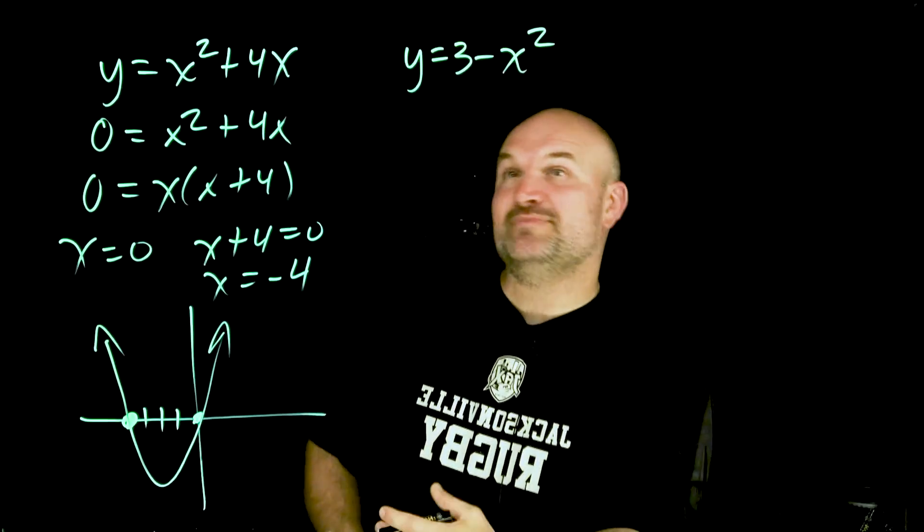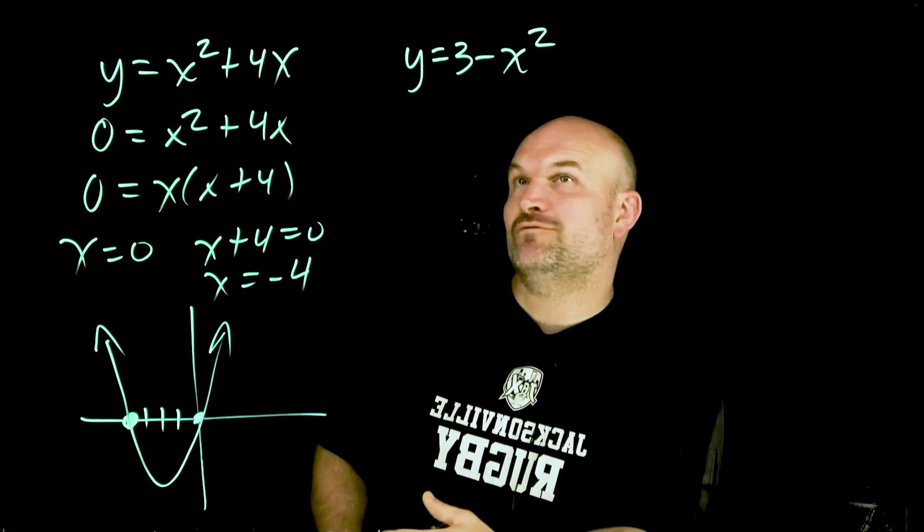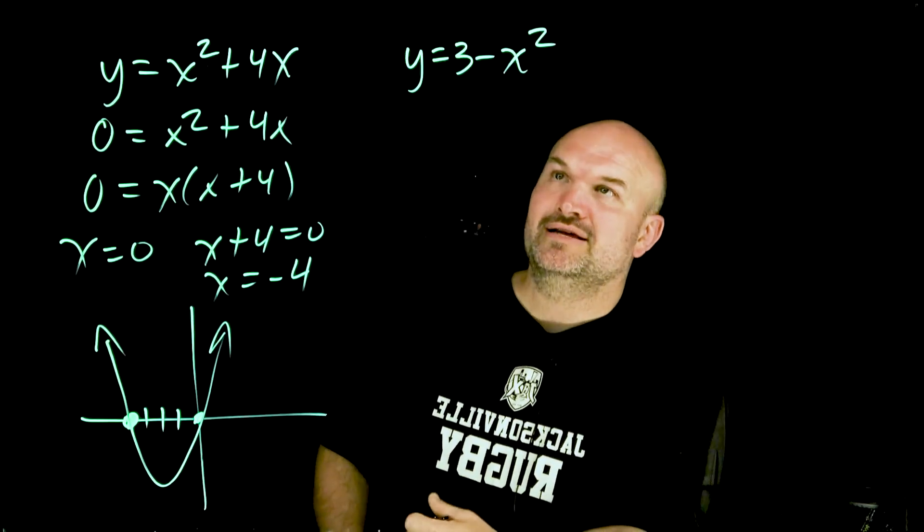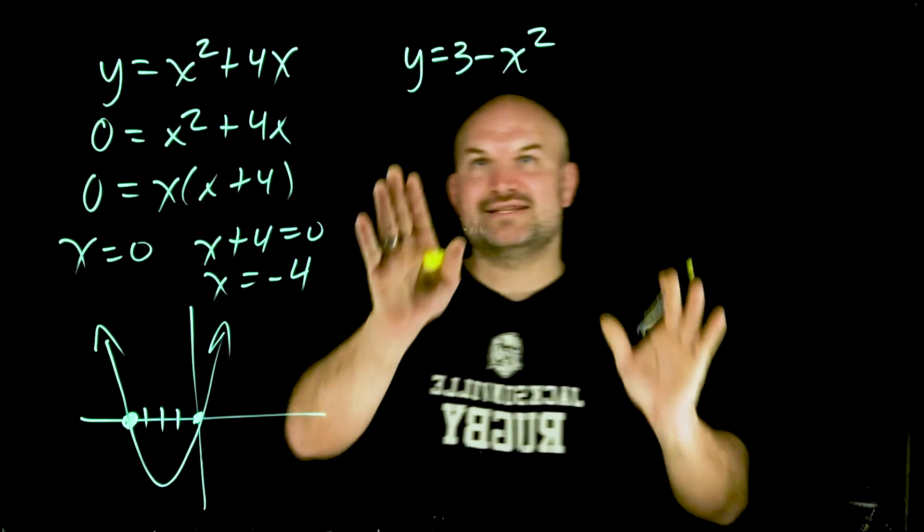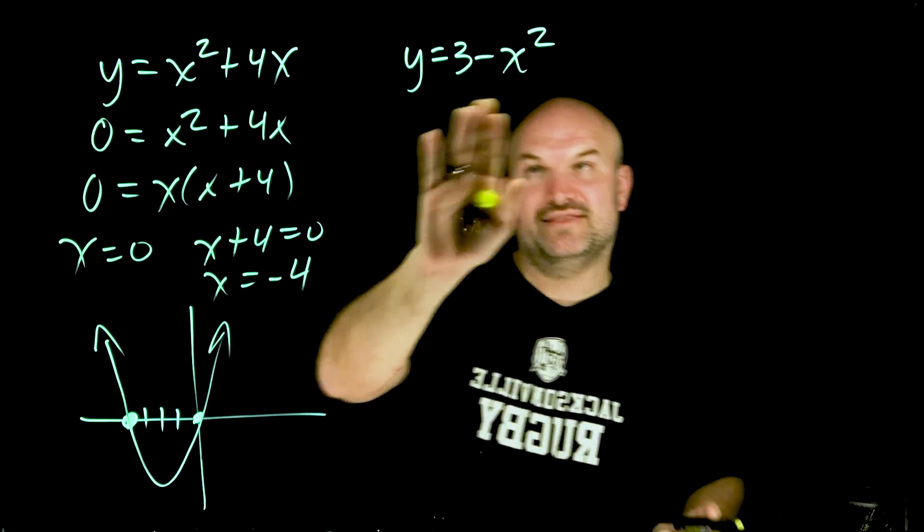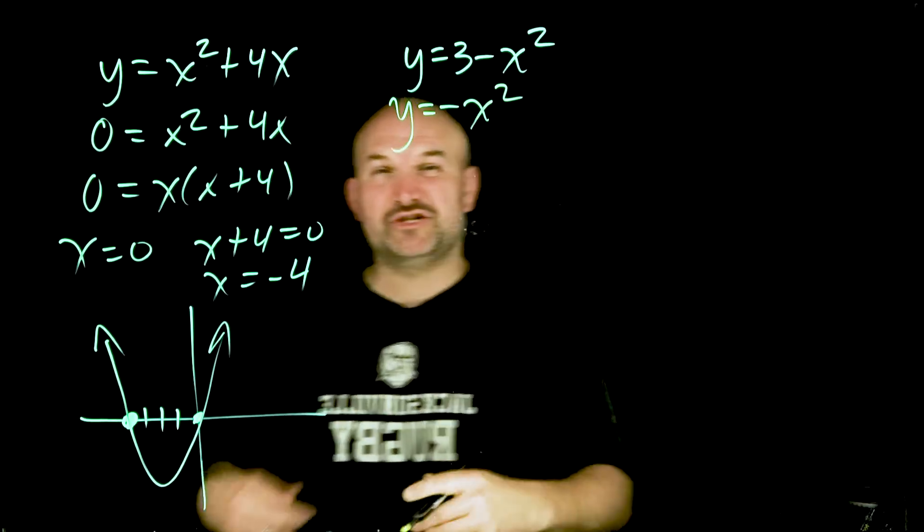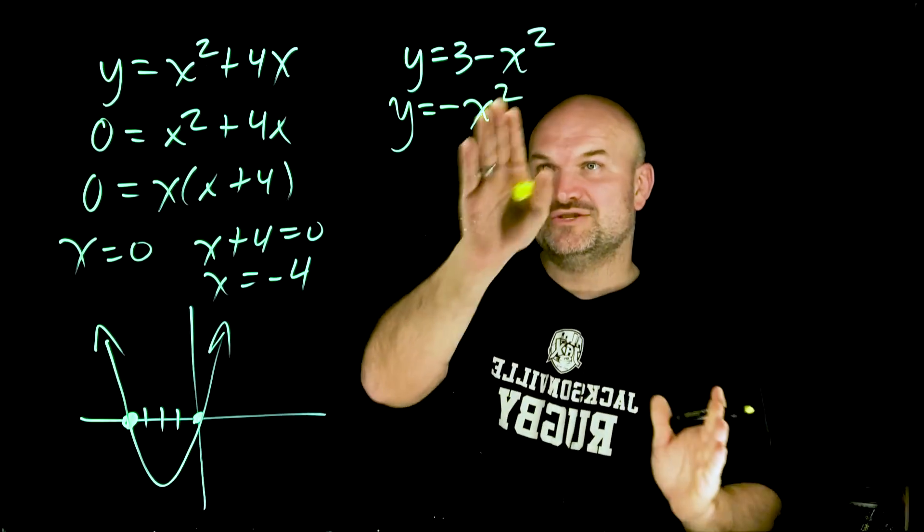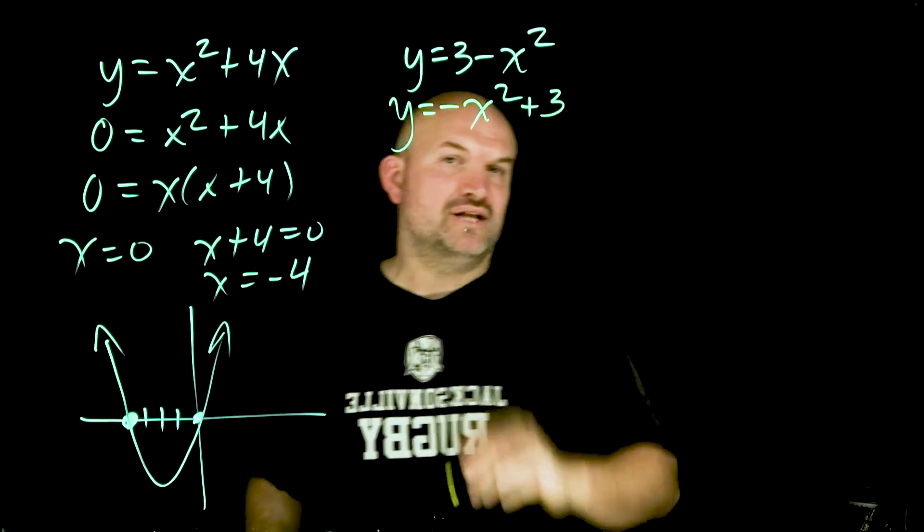All right, the next one is going to be one that commonly students make mistakes on. So in this case, I have y equals 3 minus x squared. So I think it's important to understand your vertex form in this case, and also understand that we typically don't want to graph it in this way. What we're going to want to do is rewrite the x squared first. So make sure you keep the negative with the x squared. So it's negative x squared, and that's a positive 3. So we can rewrite that as plus 3.